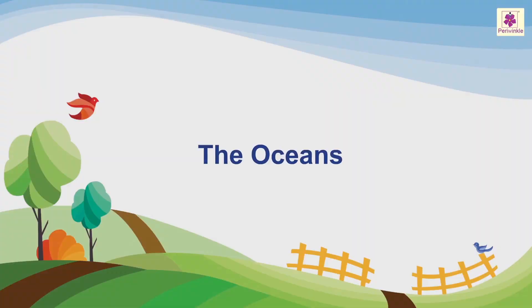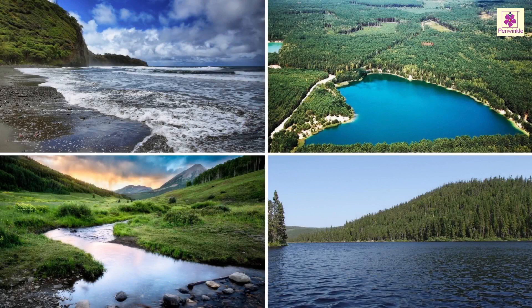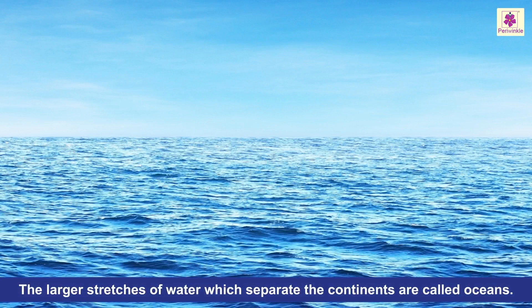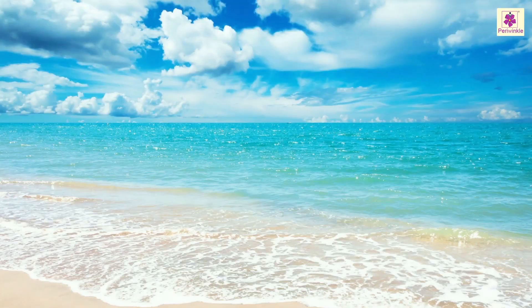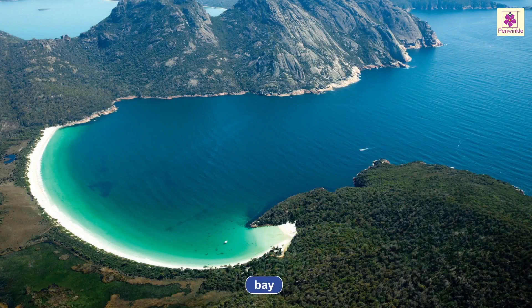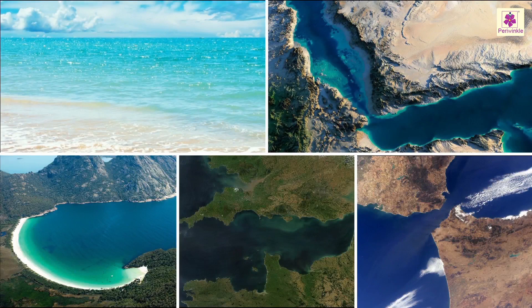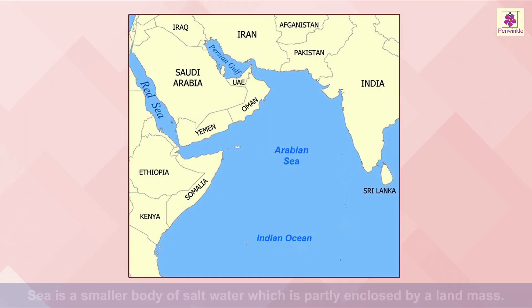Nearly 70% of the Earth's surface is water. There are different kinds of water bodies based on their sizes and boundaries. The largest stretches of water which separate the continents are called oceans. The smaller bodies are known as seas, gulfs, bays, channels, and straits.